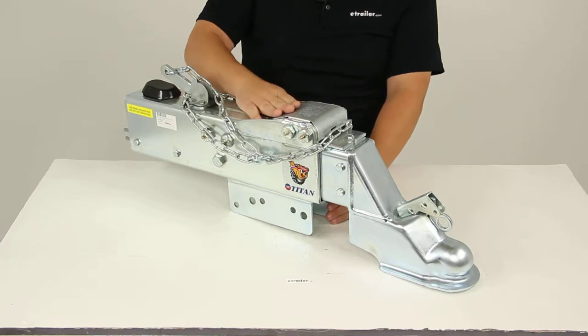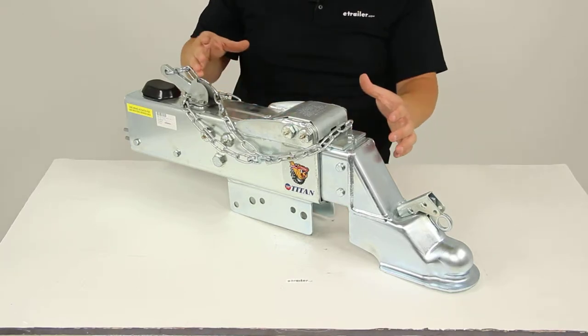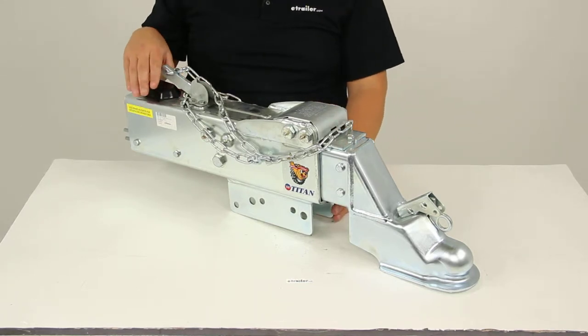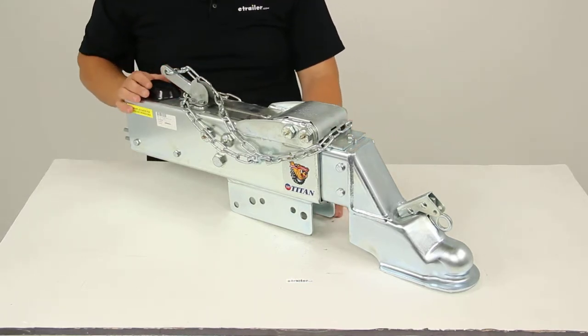What this item does is that the actuator actually telescopes, which is going to apply force to the master cylinder here at the rear, which in turn is going to apply the necessary hydraulic pressure to engage the brakes on your trailer.